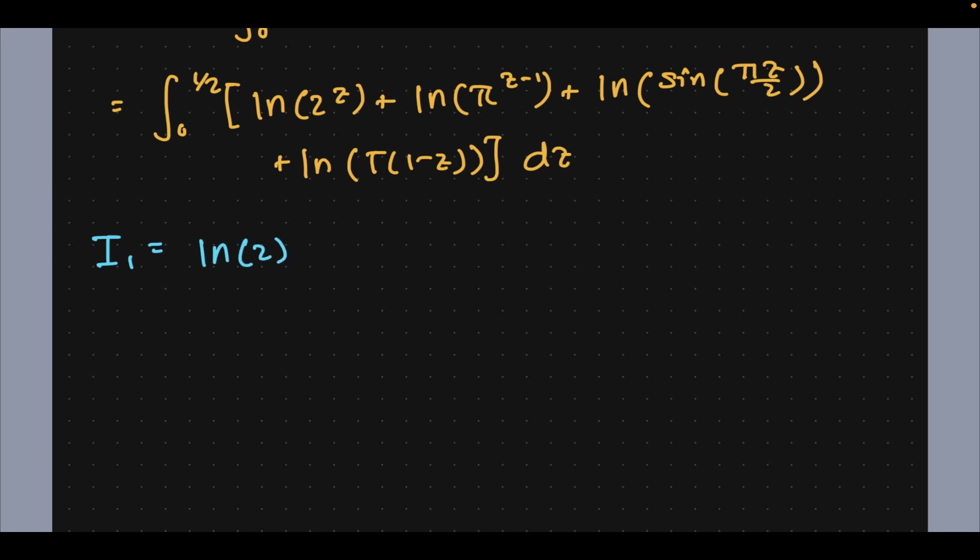I1, well the first two ones are pretty easy because natural log of 2 will come out. Just the integral from 0 to 1/2 of z dz, which is natural log of 2 over 8.